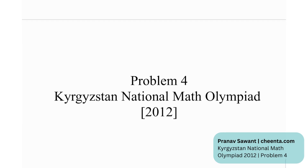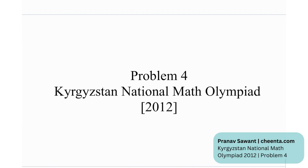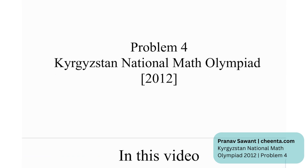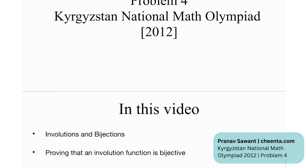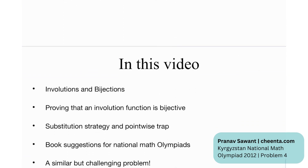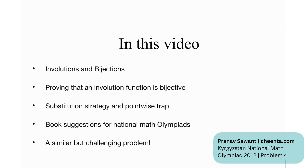This is problem number four from the Kyrgyzstan National Math Olympiad in the year 2012. In this video, we're going to consider involutions and bijections. I'm going to prove that an involution function is necessarily bijective. Then we are going to learn what the substitution strategy and pointwise trap is. And at the end, we have book recommendations for National Math Olympiad and, of course, a similar but challenging problem.